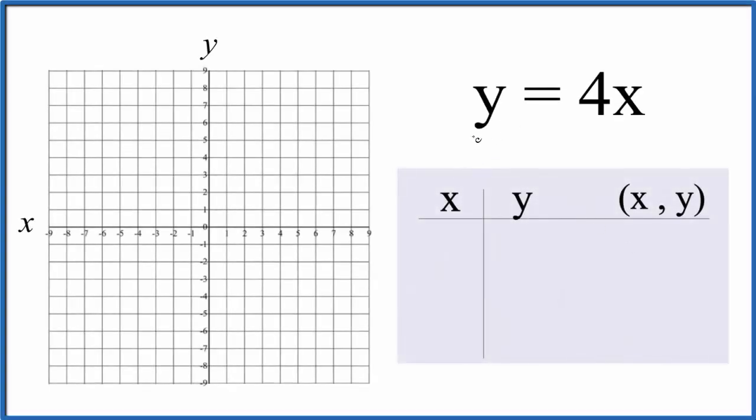In this video we'll draw the graph for y equals 4x and we're gonna do it two ways. First we'll put values in for x here and get the corresponding y value and that'll give us points that we can graph and find the line for y equals 4x. Then we'll check our work with the slope-intercept formula.